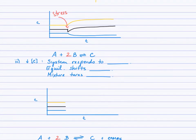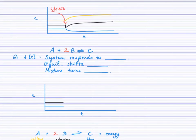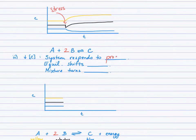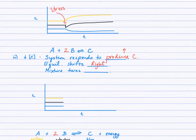A third concentration stress: decrease C. The system responds by the opposite — increasing C, producing C. The forward direction increases C. So if the forward reaction speeds up, that shifts the equilibrium right, which means the mixture will turn more blue, since C was blue in color.